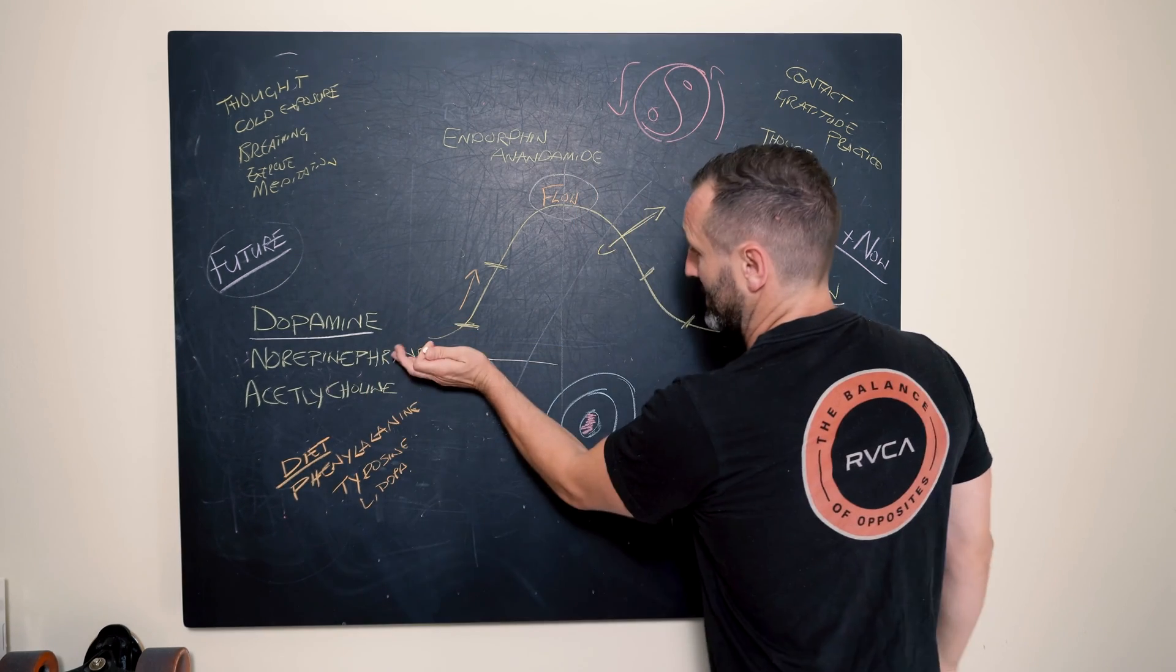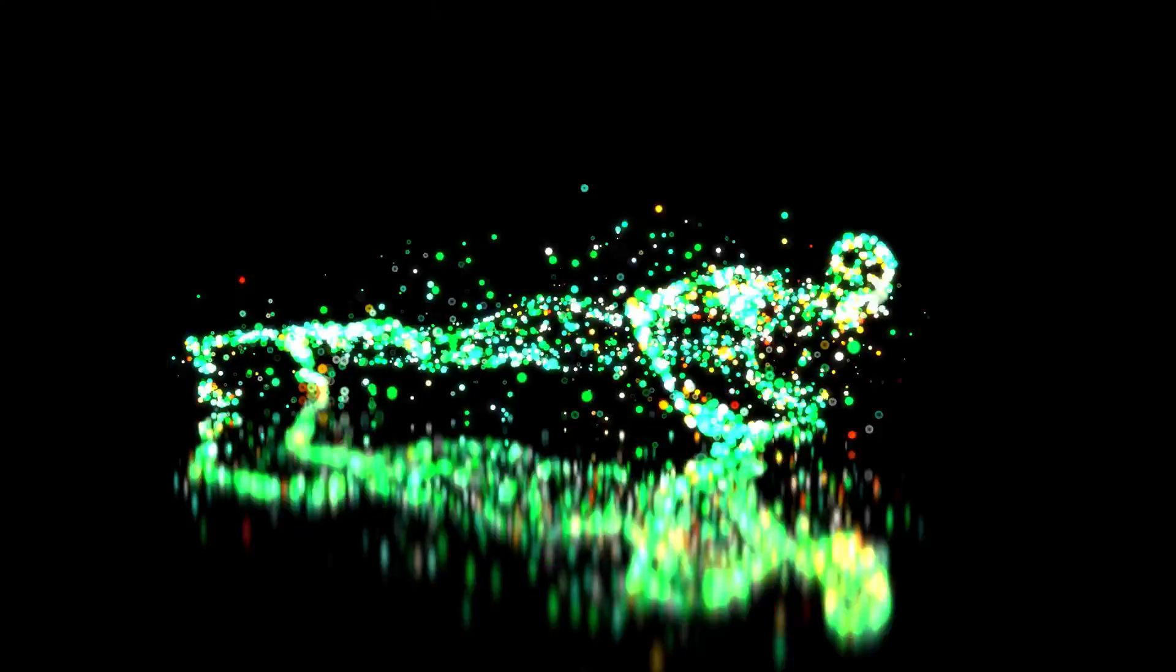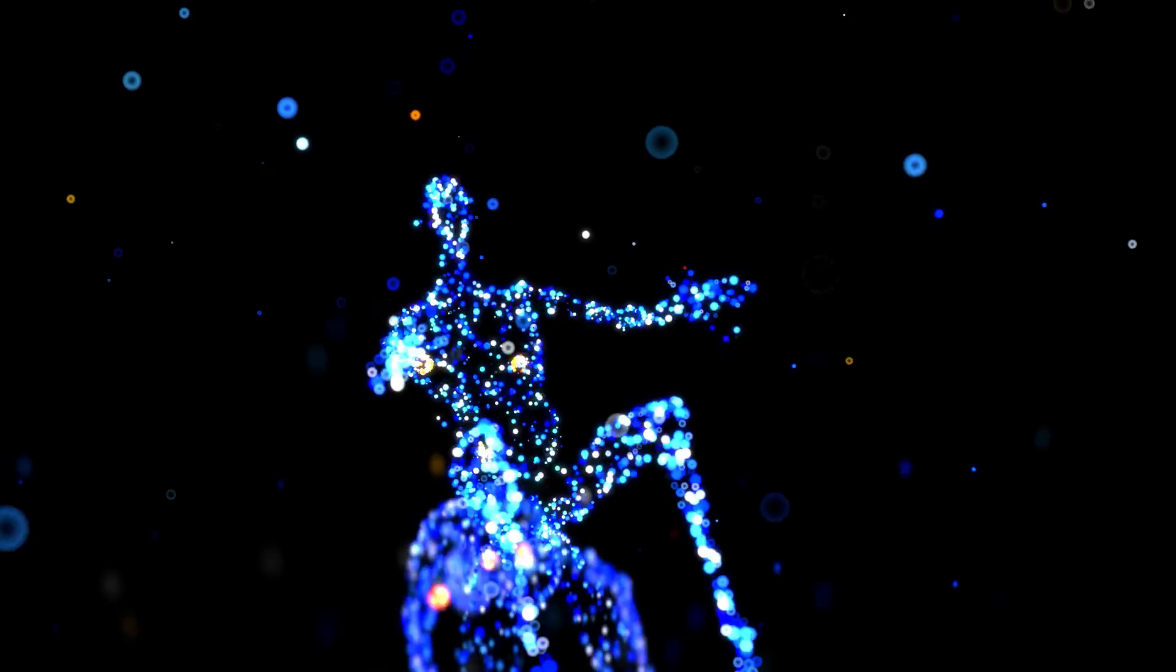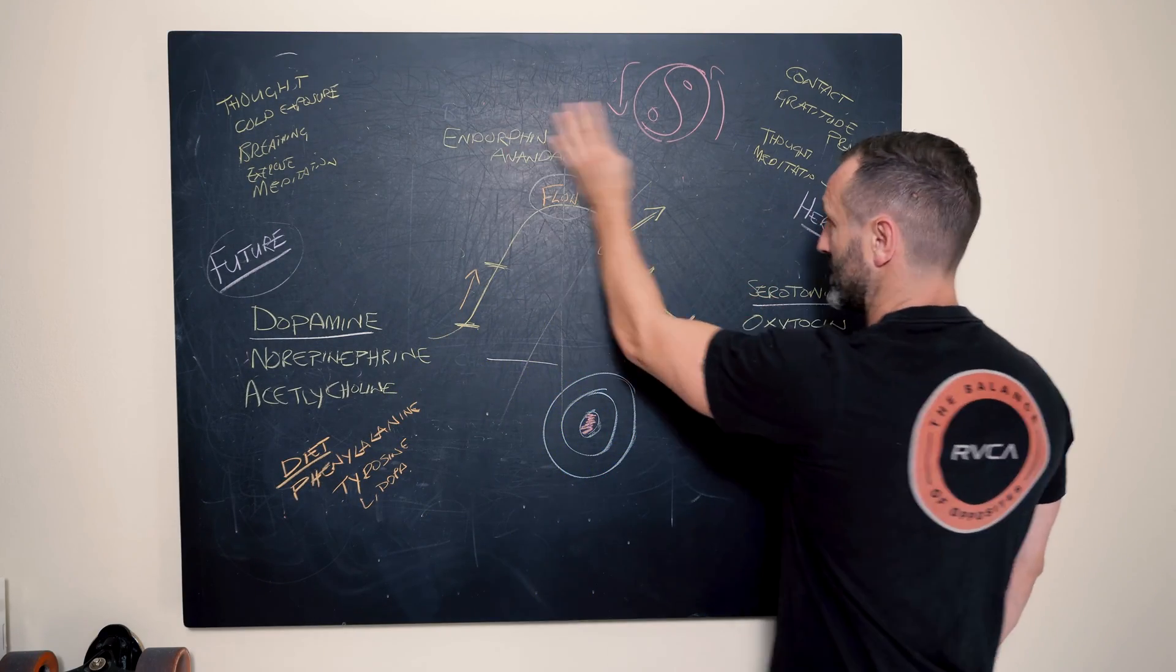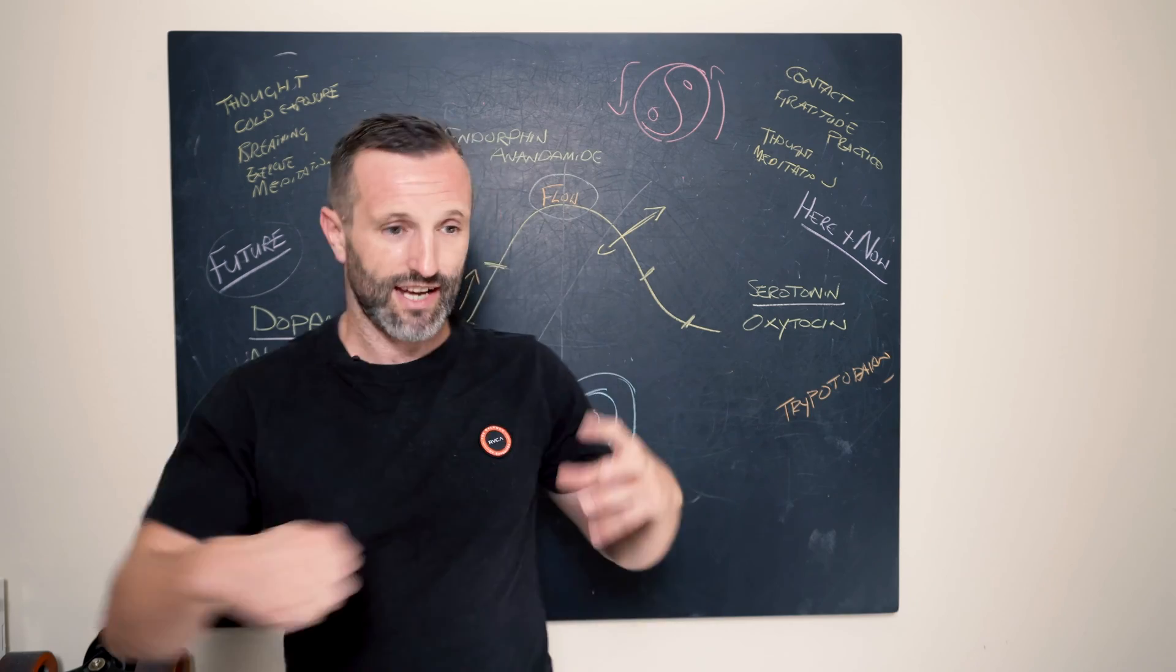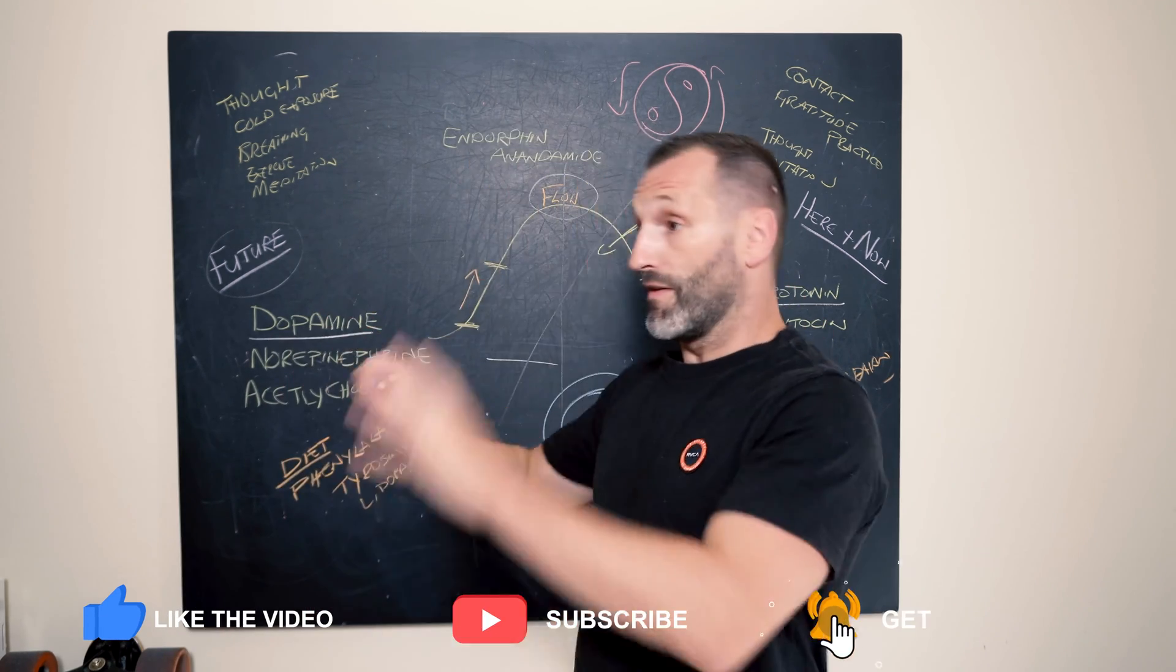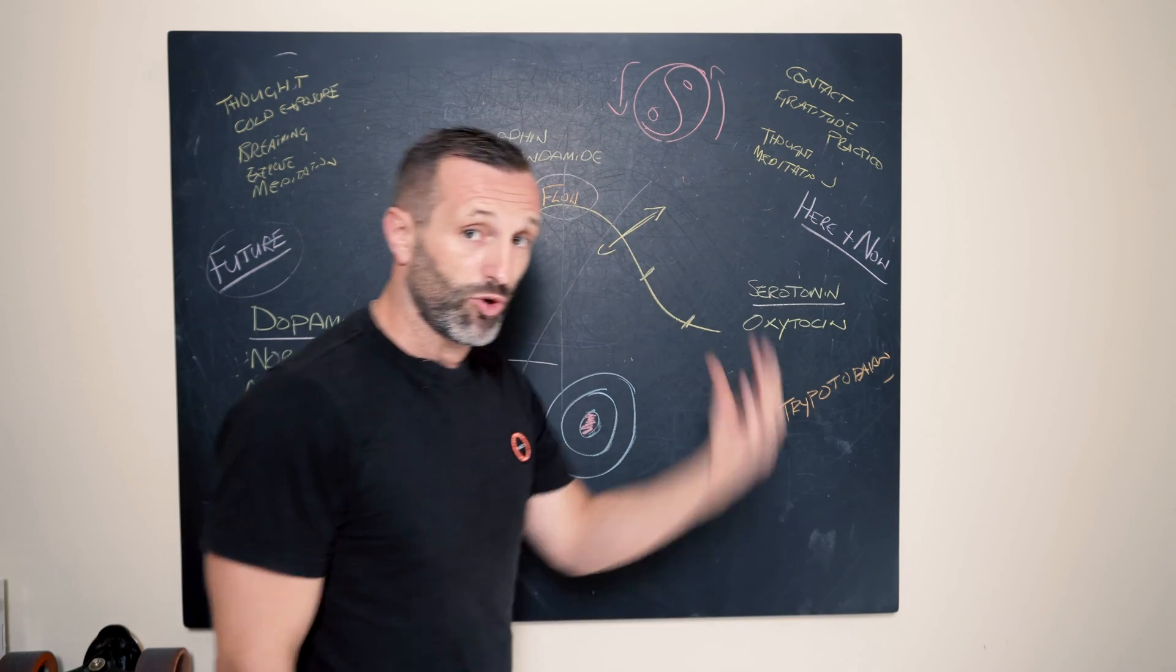Now let's say we've addressed that triggering portion here. Now we're in the flow state. We're releasing endorphins and anandamide, and then we're coming to this sort of tail end where we're expressing serotonin and oxytocin. These neurotransmitters can be defined as here and now molecules, here and now, what we have right in the moment.